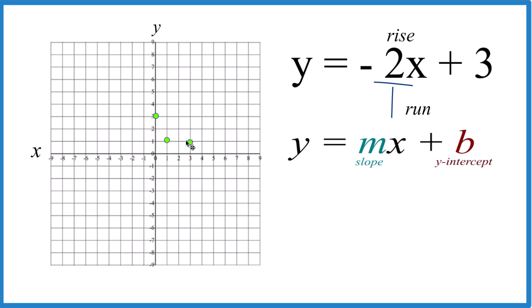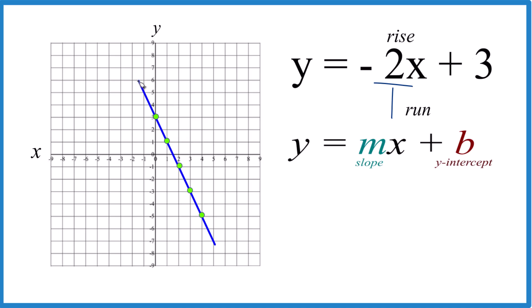From there, we go down 2 over 1, and you can just keep going down 2 over 1, and that gives you the line for y equals negative 2x plus 3. Let's put a line through that. Let me put arrows here to show it goes to infinity. So that's how you do it.